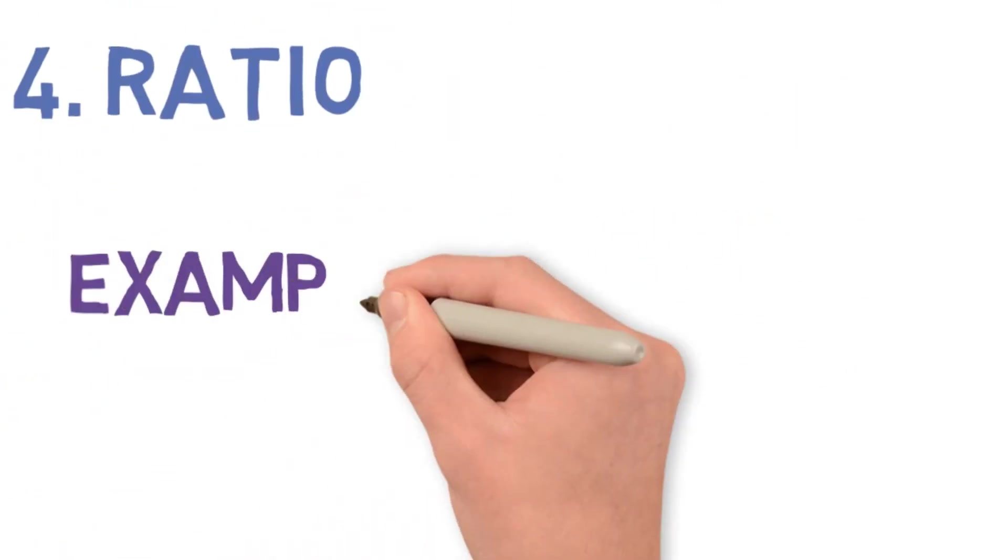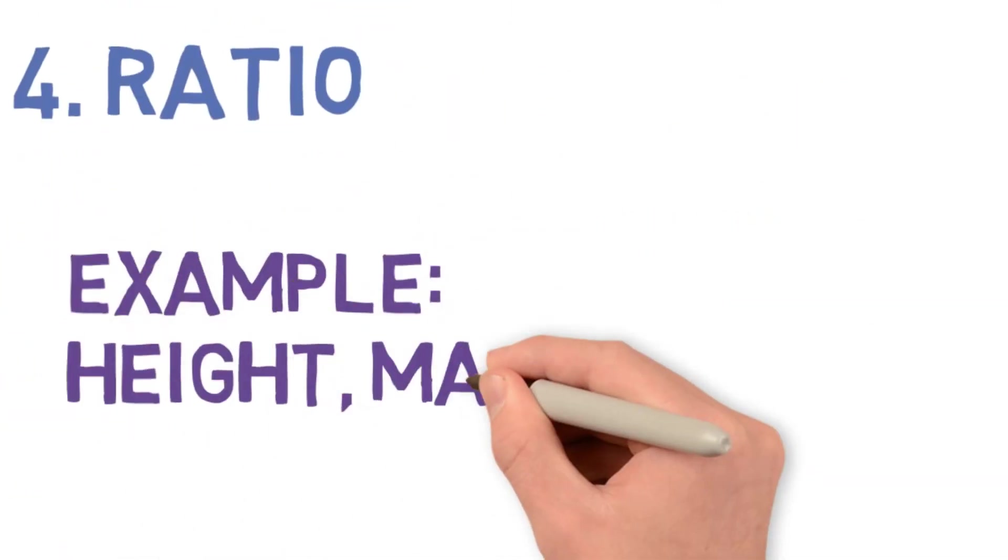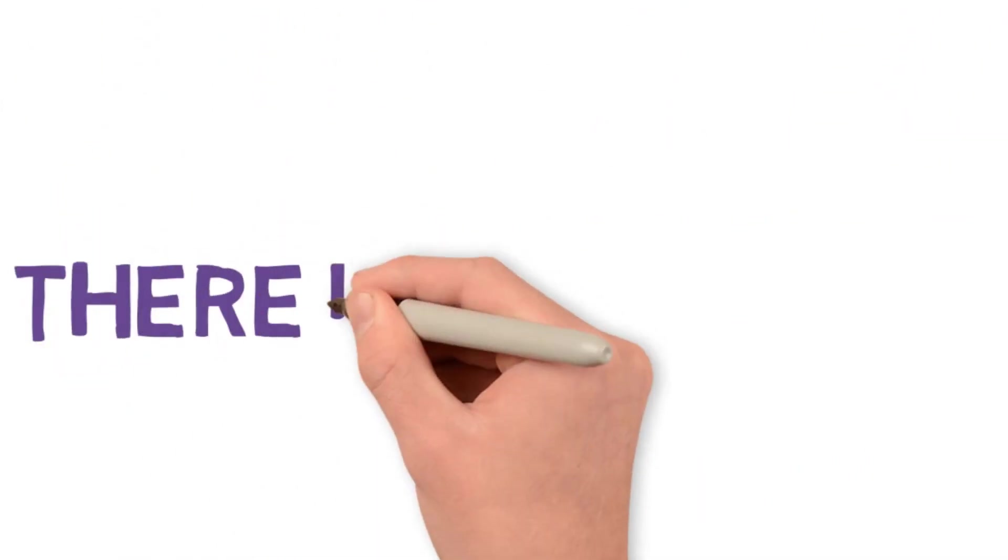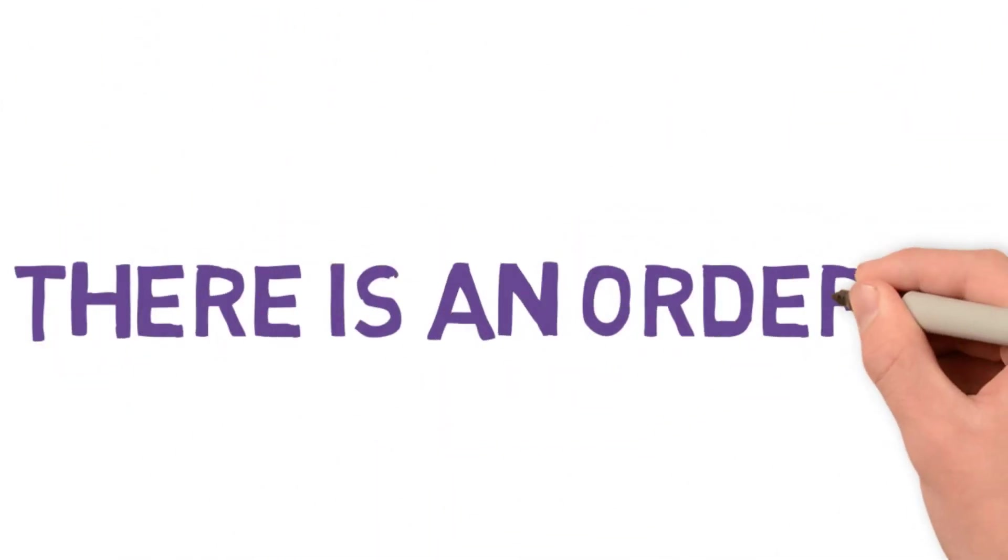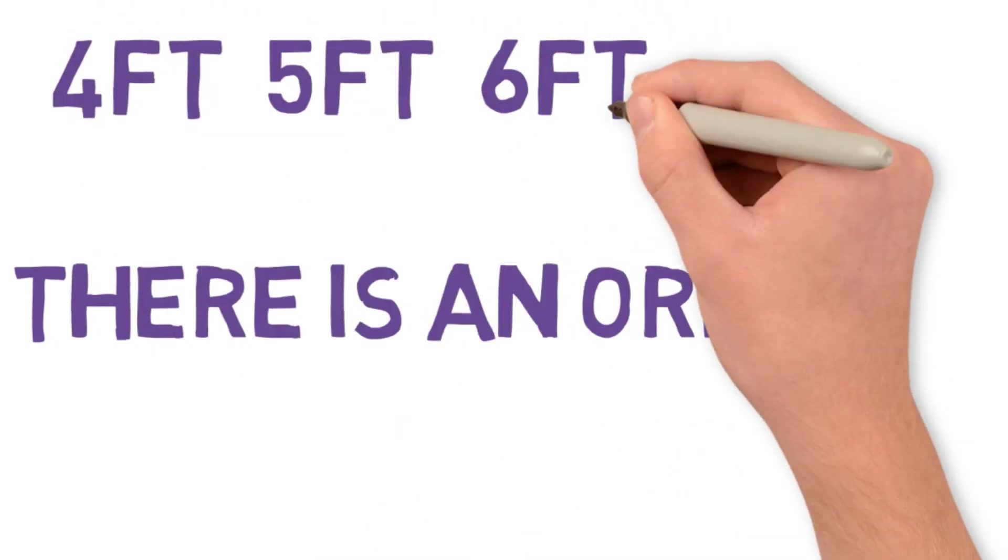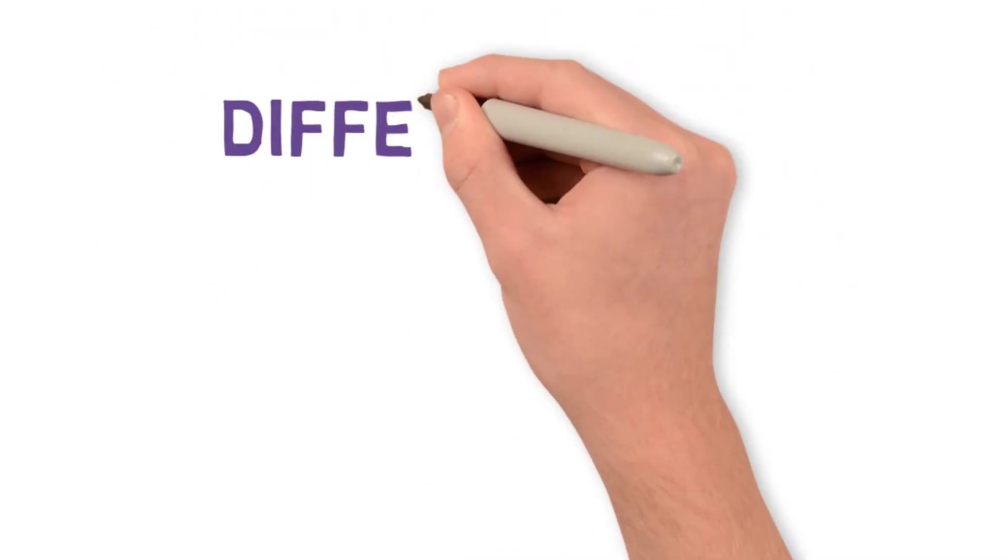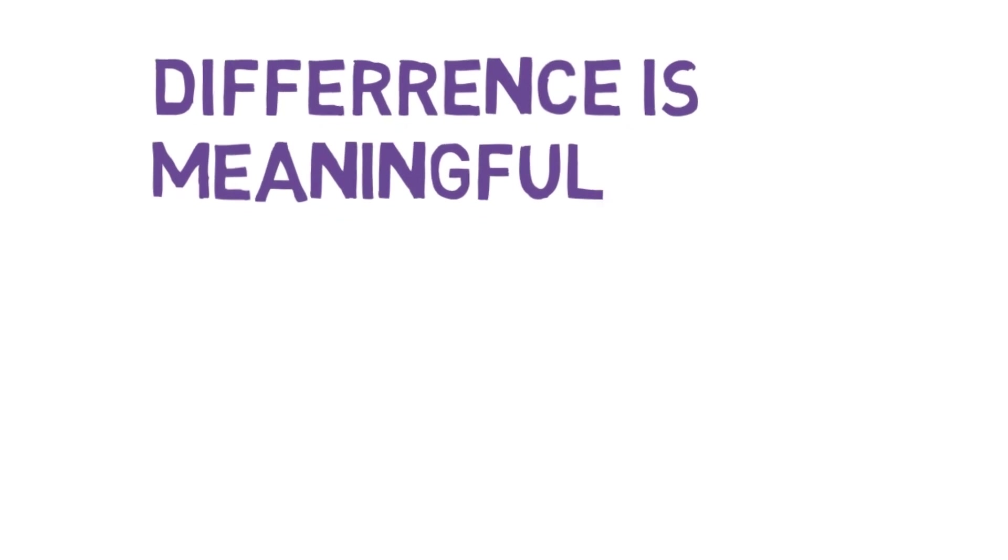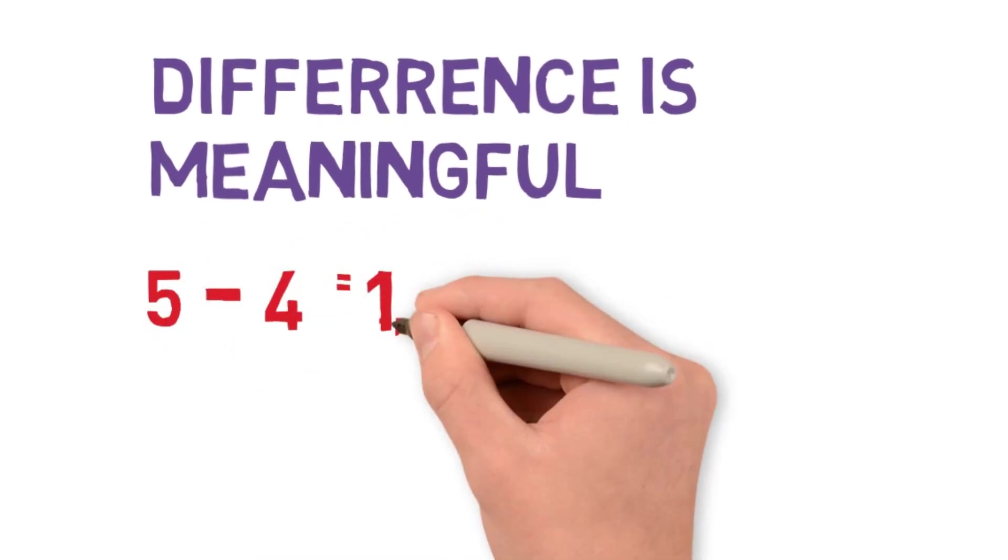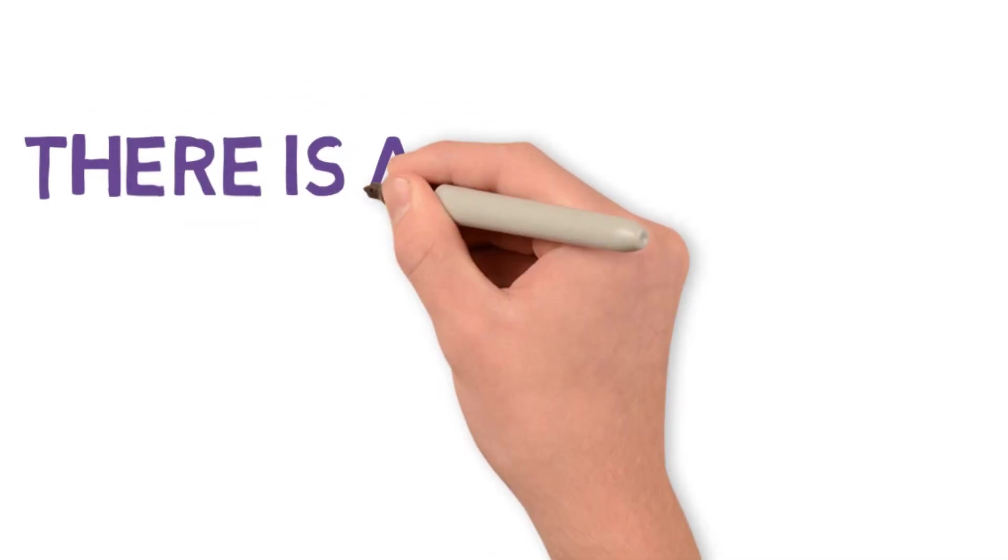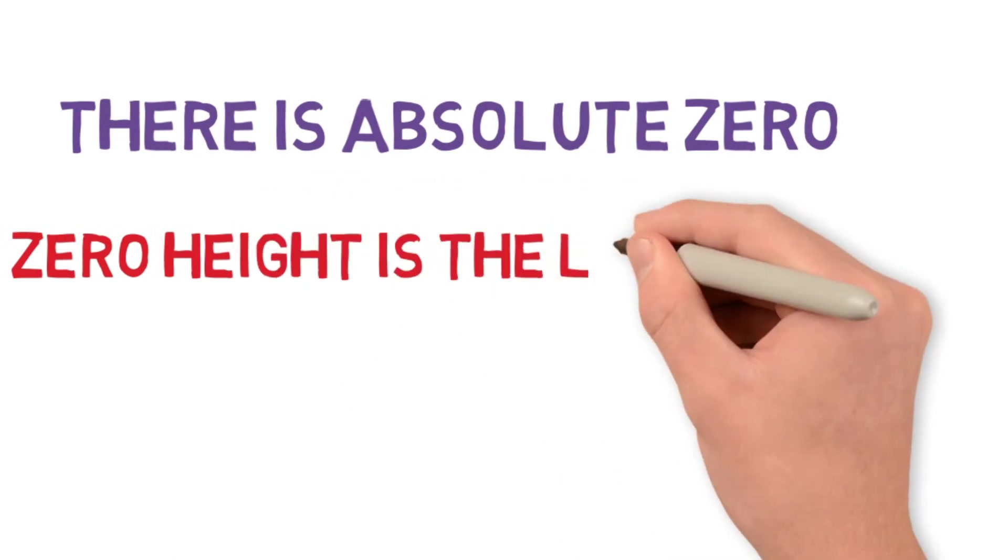The fourth type is ratio. Example is height, mass, volume. There is an order. For example, four feet comes before five feet, then six feet. And the difference is also meaningful. Five minus four is one, and six minus five is one. And the key difference here is there is absolute zero. Zero height is the lowest value.